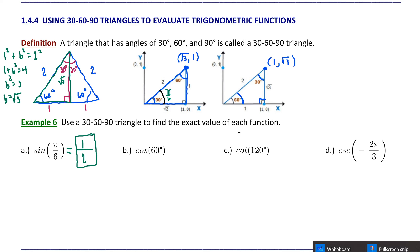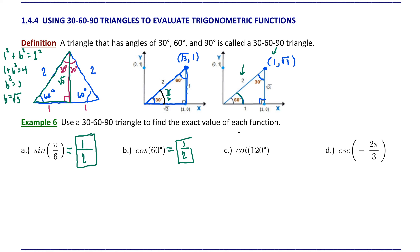For example B, cosine of 60 degrees. We can use this second diagram because we have 60 degrees constructed in standard position. Remembering that cosine is the x-coordinate divided by r, the x-coordinate for 60 degrees is 1 and the distance r is 2, so cosine of 60 degrees is also 1/2.